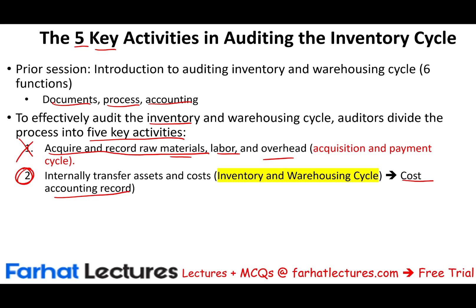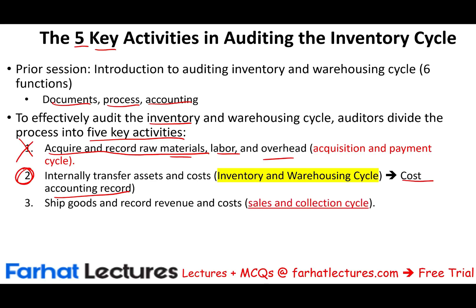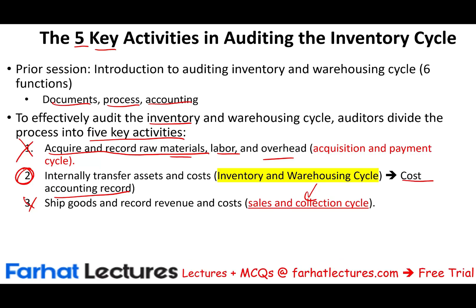Once we produce an item, we transfer it to finished goods, then ship it and record the revenue and cost. This activity in the inventory cycle is part of the sales and collection cycle, so it is already covered. When we ship goods, we prepare shipping documents and sales invoices, making sure the records of revenues and costs are accurately documented. We verify that all goods that are supposed to be shipped are actually shipped and that all sales invoices are correct. We look at this in the sales and collection cycle.